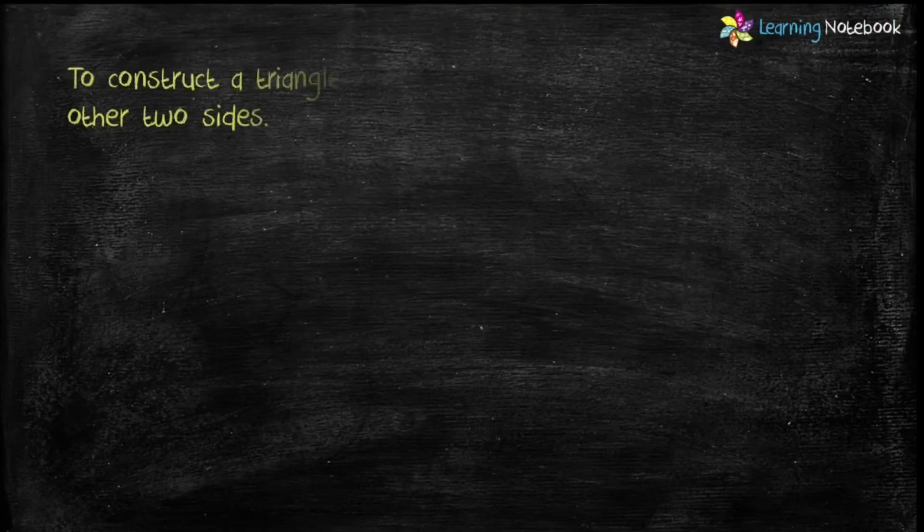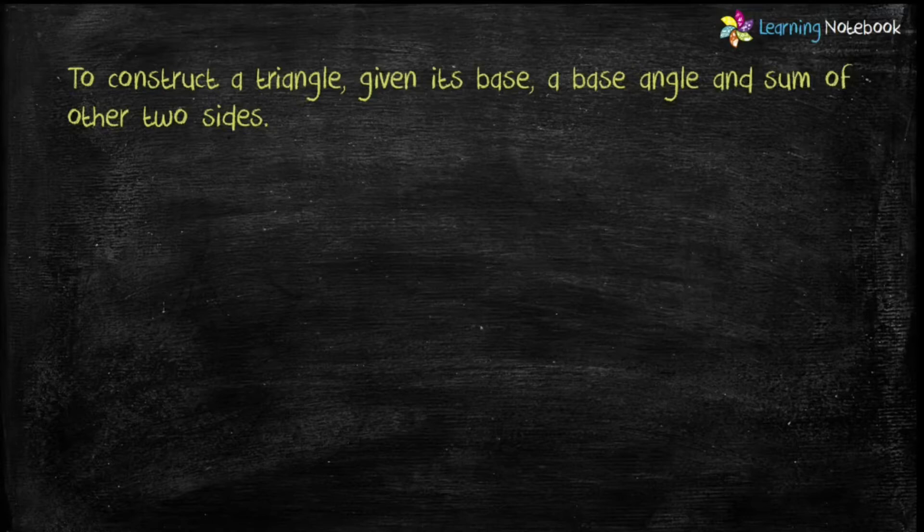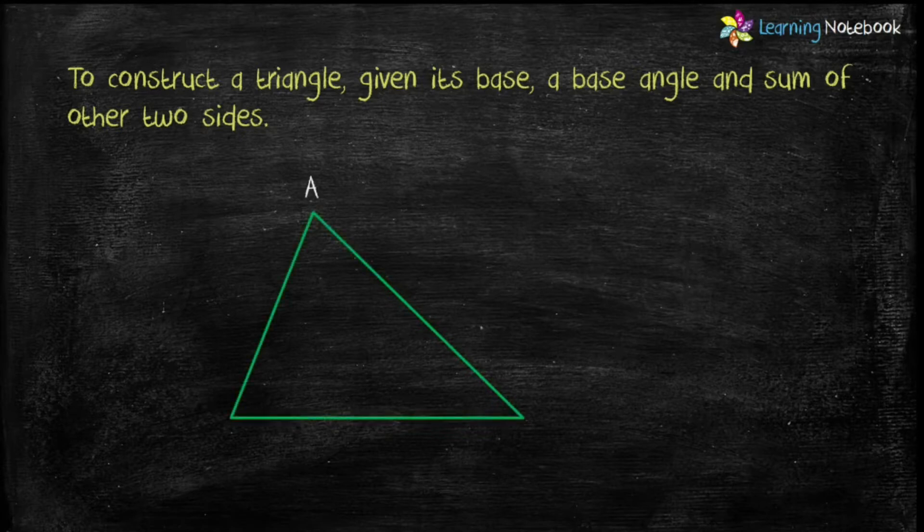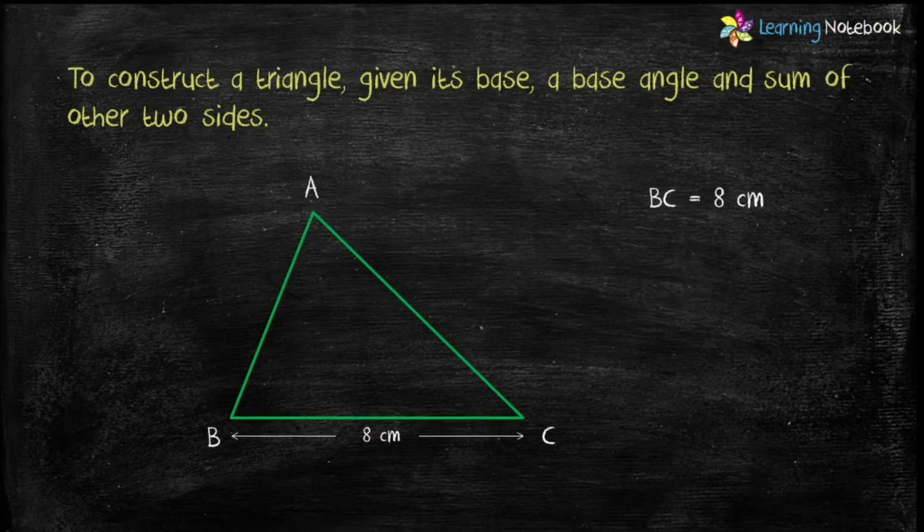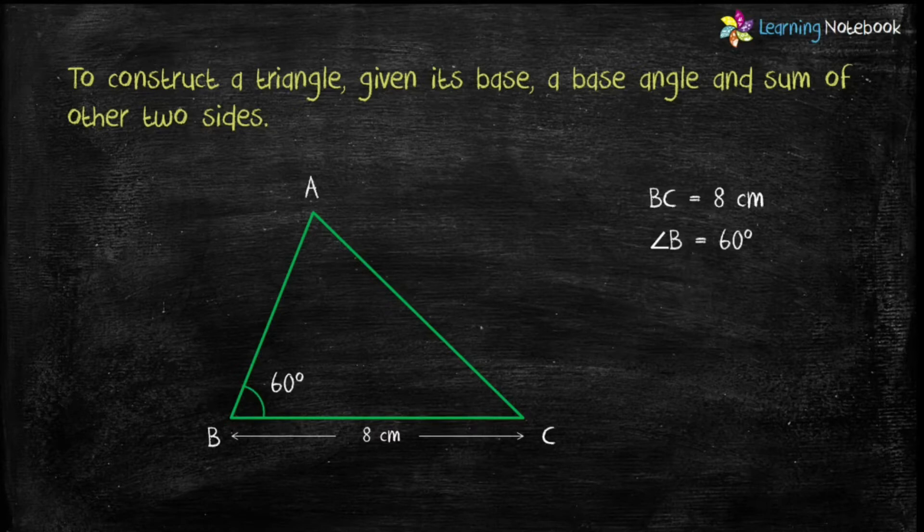So students, let's start and see what is base, a base angle, and sum of other two sides with the help of following example. Students, here base is BC, base angle is B or C, and sum of other two sides means AB plus AC.